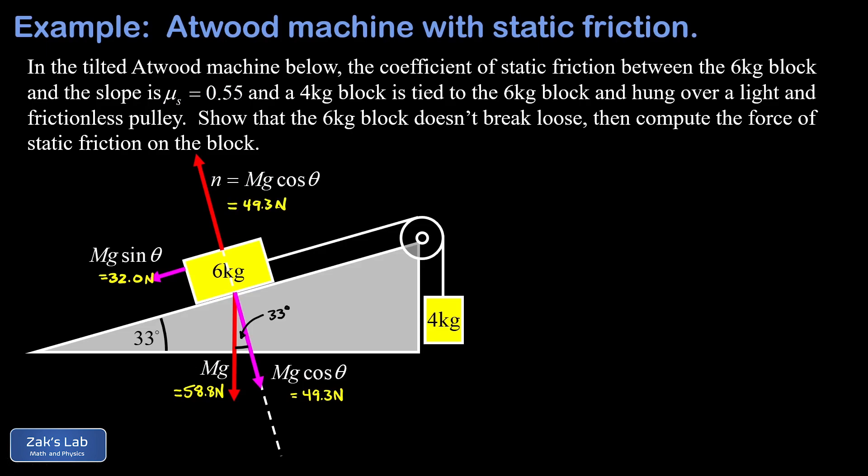Next, we get the tension in the string pulling up the ramp. And for now, that's an unknown quantity. And now we can start working on the four kilogram block. So starting with the force of gravity on the four kilogram block, I called that little mg. We can go ahead and run the numbers on this and plug in four kilograms times 9.8 meters per second squared. And that gives us 39.2 newtons.